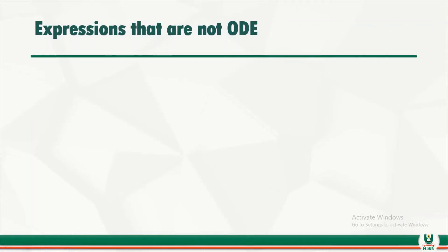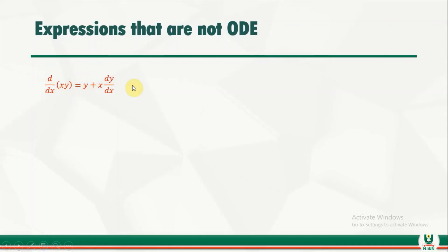Not all expressions can be referred to as ODEs. Example one: the expression shown on the board is called an identity, because the left-hand side equals the right-hand side. If you apply the product rule — keep y and differentiate x, then keep x and differentiate y — you get back the same expression. Since both sides are equal, this is an identity, not a differential equation.